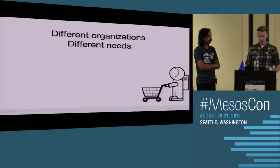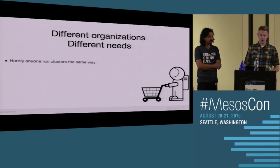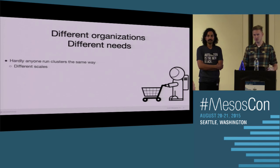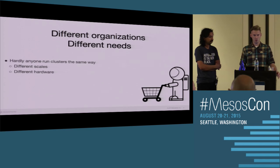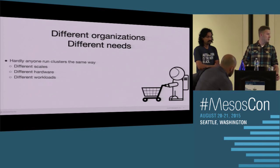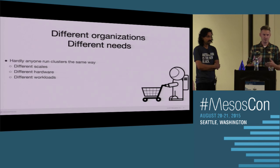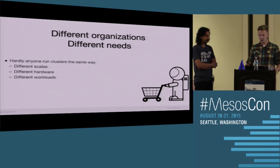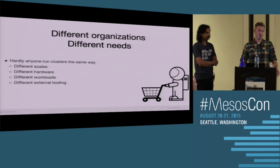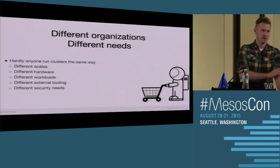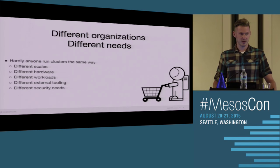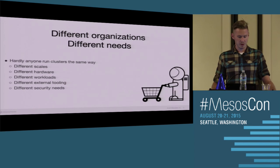If we take a step back and look at how people actually run clusters, hardly anyone runs a large cluster the same way. They have different scales — from tens of machines to tens of thousands. They're running on different hardware: VMs, EC2, or bare metal. They're running very different workloads. Even people running the same web stacks exhibit different behavior depending on the applications. They use different tooling, different monitoring systems, and they have very different security needs — a hedge fund on Wall Street versus a startup that just wants to get something running.